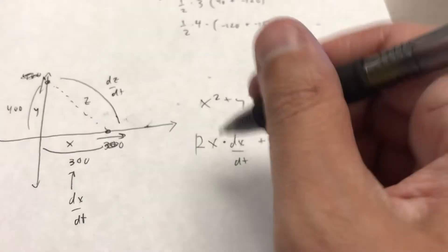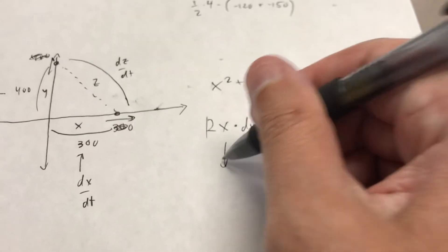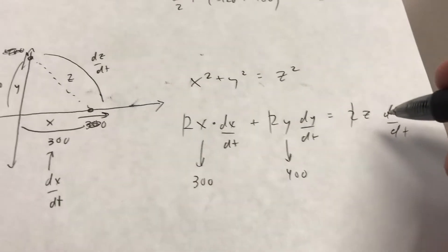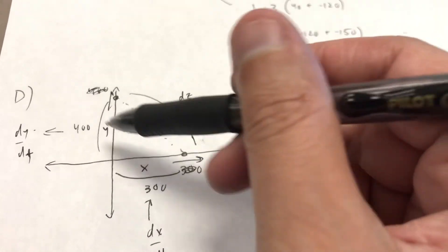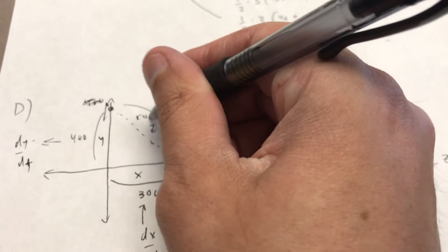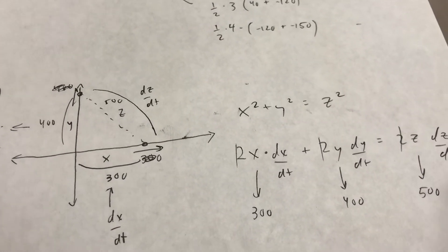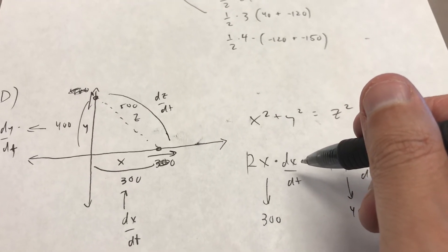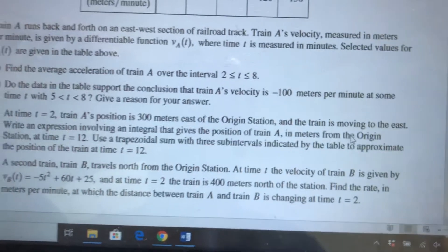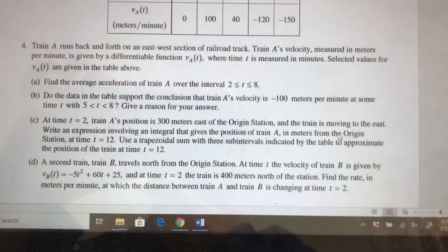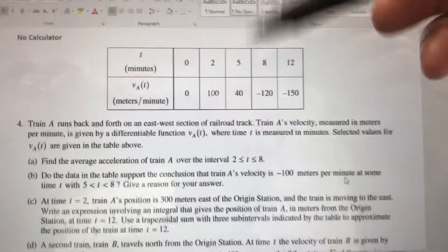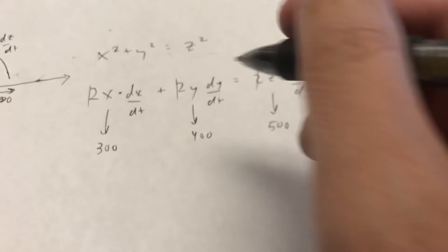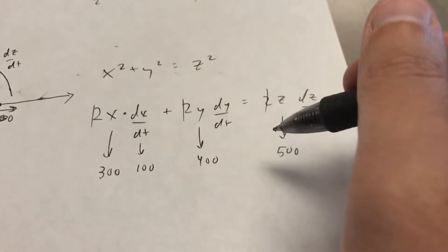At this point, we should just be able to fill all these values in. They told me that x was 300. They told me that y was 400. It's a right triangle, so I can solve for z. This is a 3, 4, 5 right triangle. So at that moment in time, z is 500. We're trying to find dz/dt, so we can't fill that in. They told me in the table that at 2 minutes, the train is moving at 100 meters per minute in the x direction. So we can go ahead and fill that one in as well.